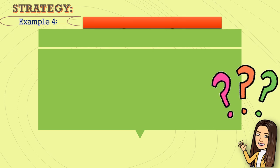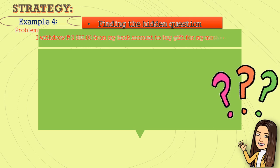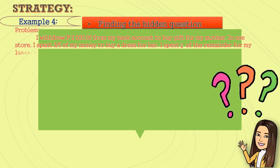Example number four: Finding the hidden question. I withdrew two thousand pesos from my bank account to buy a gift for my mother. In one store, I spent three-fifths of my money to buy a dress for her. I spent one-fourth of the remainder for my lunch. How much money was left to me after buying lunch?